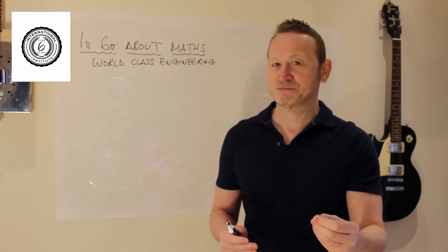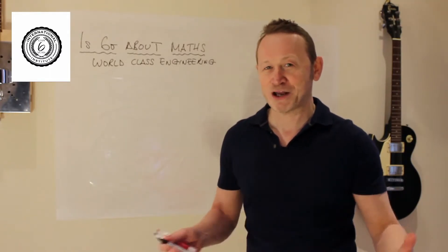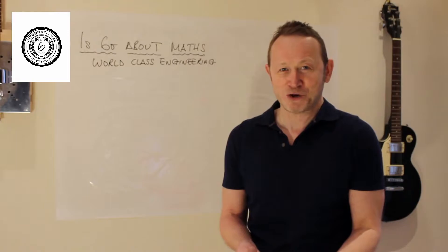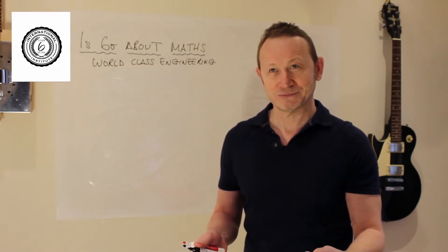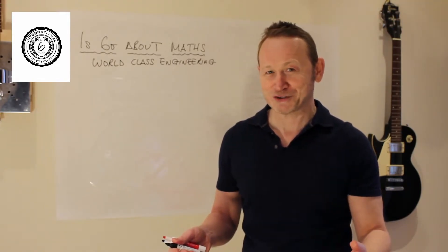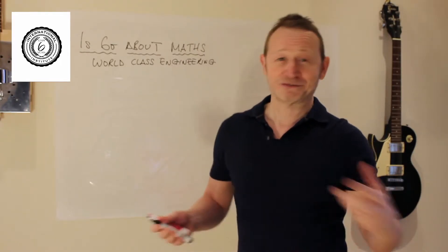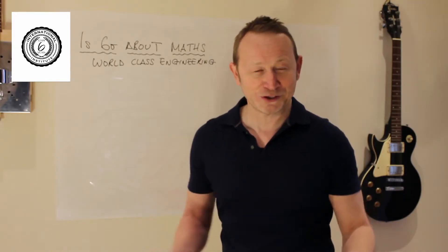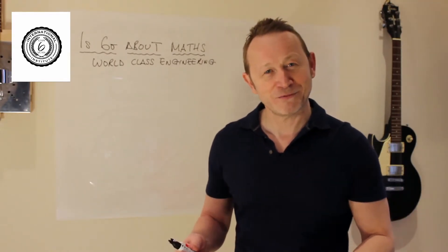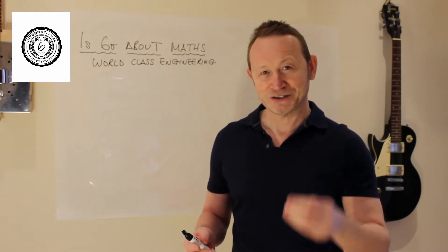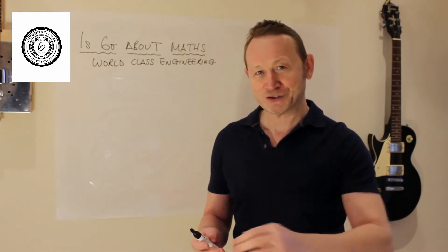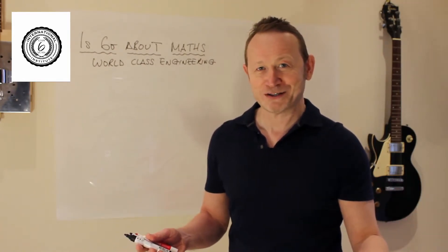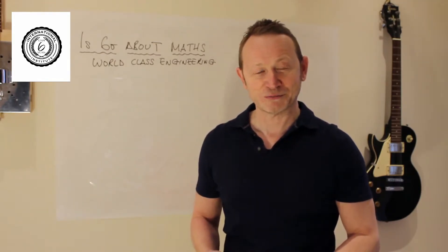When Isaac Newton coined the phrase every action has an equal and opposite reaction, it's one of the laws of physics. There's no maths in that phrase. Now I'm sure there's some maths you might want to use if object A or object B and you want to know what's going to happen. But actually the principle, the laws of physics, they have no mathematics in them and it's very similar with Six Sigma.